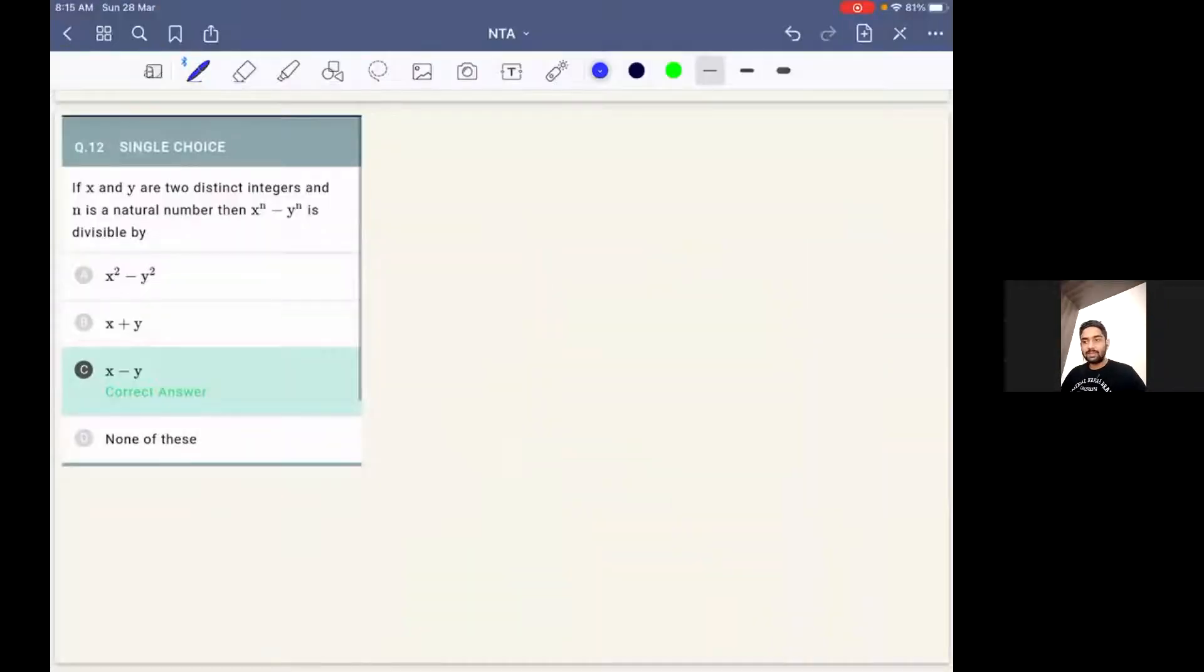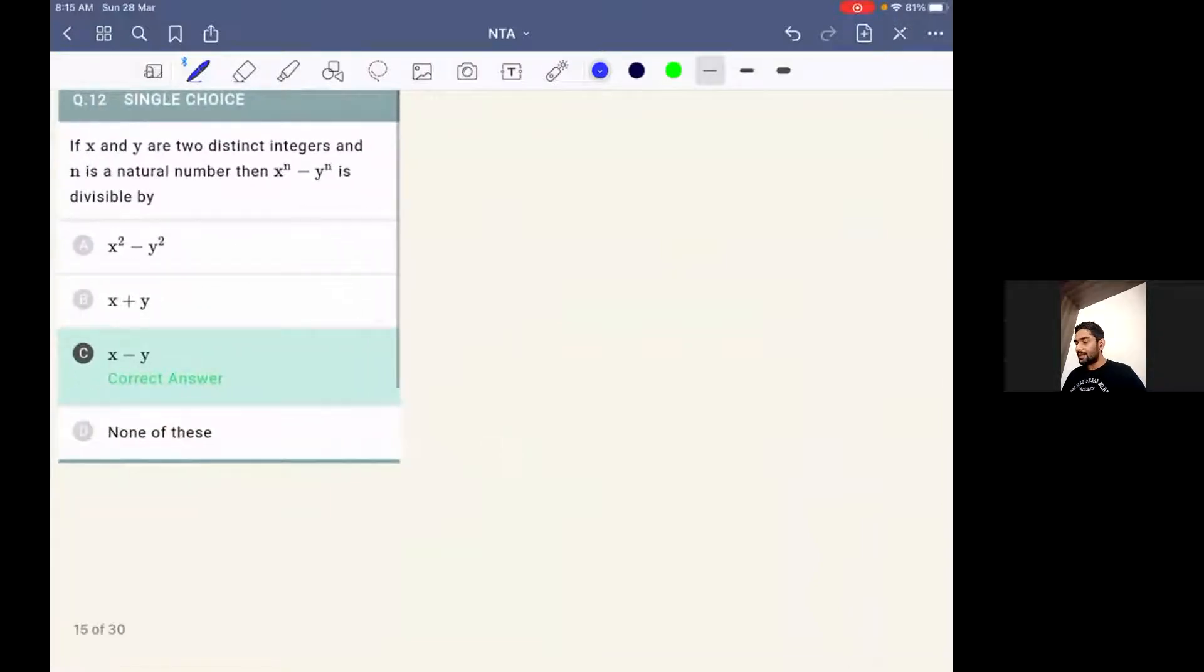We can see question number 12 on the screen. It's given that if x and y are two distinct integers and n is a natural number, then we have to find out that x^n minus y^n is divisible by which of the following options.